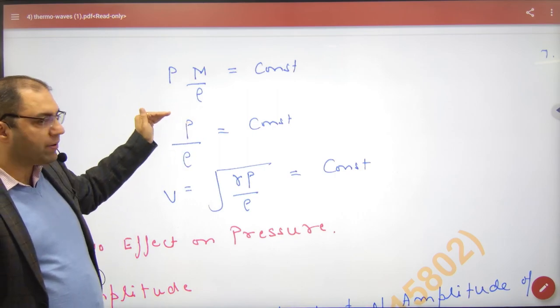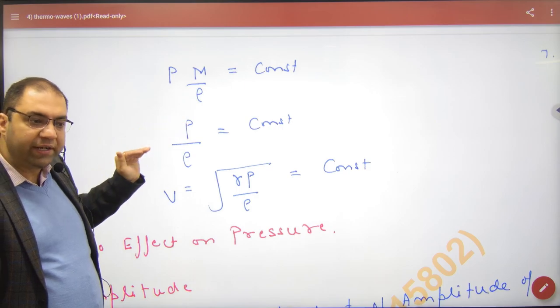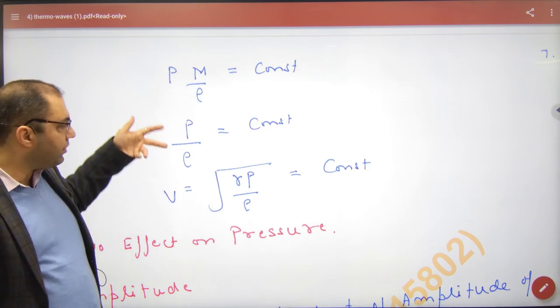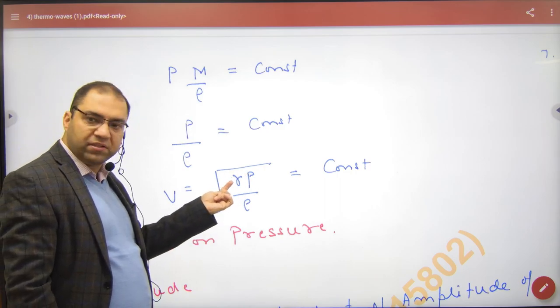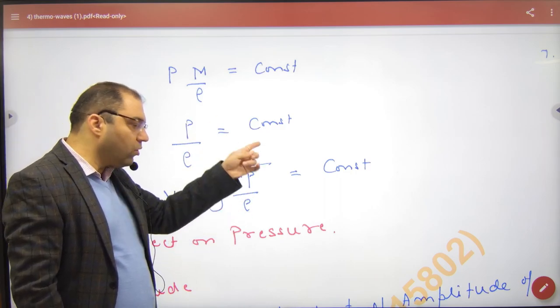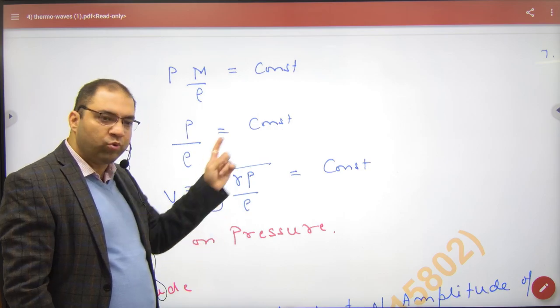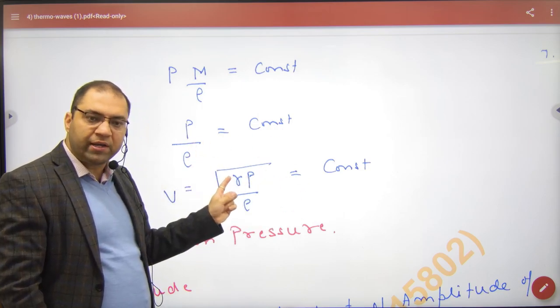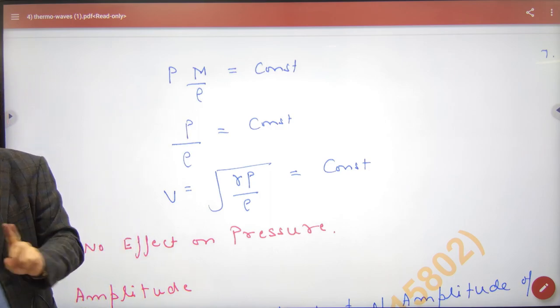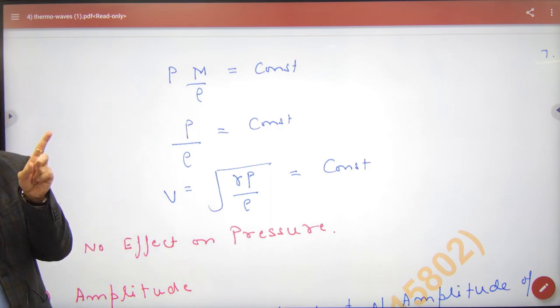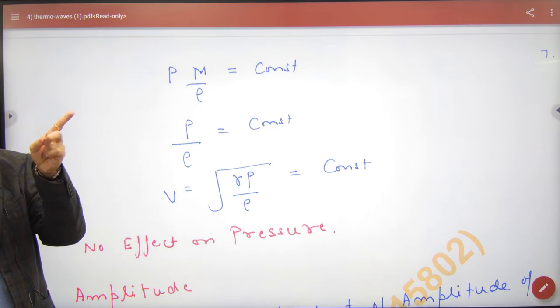Meaning if I increase the gas pressure, its density will also increase, so the ratio remains the same. In sound, gamma is already constant. P by rho is also constant. So overall everything is constant. If I increase pressure, density increases, so there is no difference in velocity of sound. First factor is inversely proportional to square root of density. Second, directly proportional to temperature. Pressure has no effect.